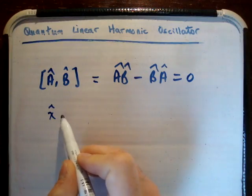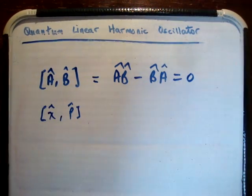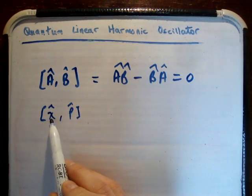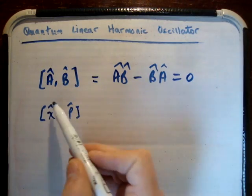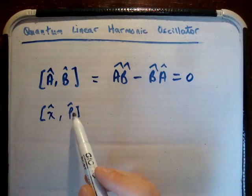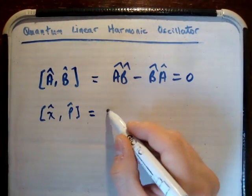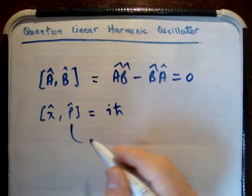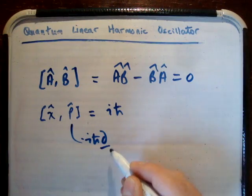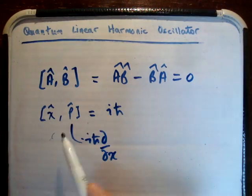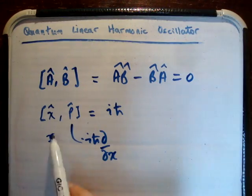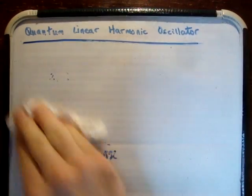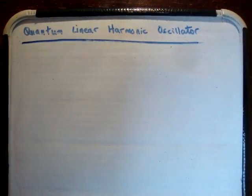Position and momentum do not commute. That means if you measure the position of your system, you must disturb the current momentum in your system. The commutator of position and momentum is i times h-bar. You can verify this by plugging in minus i h-bar d/dx as the momentum operator and x for position, multiplying out and subtracting — you'll get i h-bar. This is, by the way, where the uncertainty principle comes from.